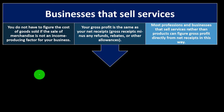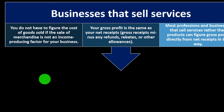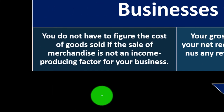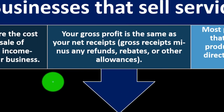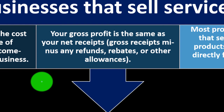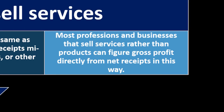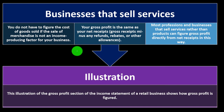For businesses that sell services, it's even easier because there's no inventory and therefore no cost of goods sold. You do not have to figure cost of goods sold if the sale of merchandise is not an income-producing factor. The gross profit is the same as net receipts — gross receipts minus any refunds, rebates, or other allowances. Most service professions can figure gross profit directly from net receipts.